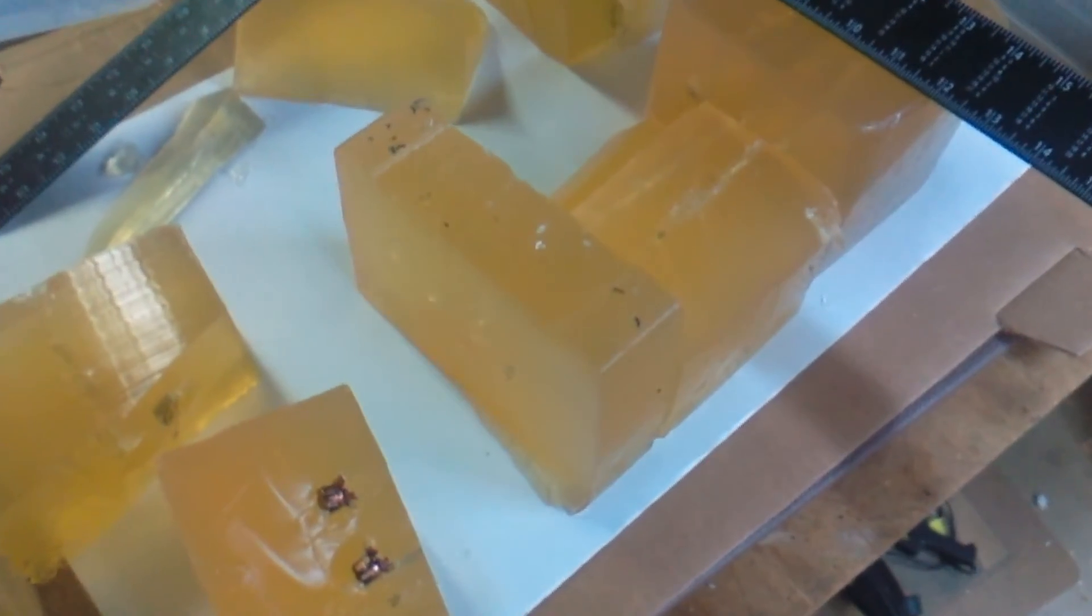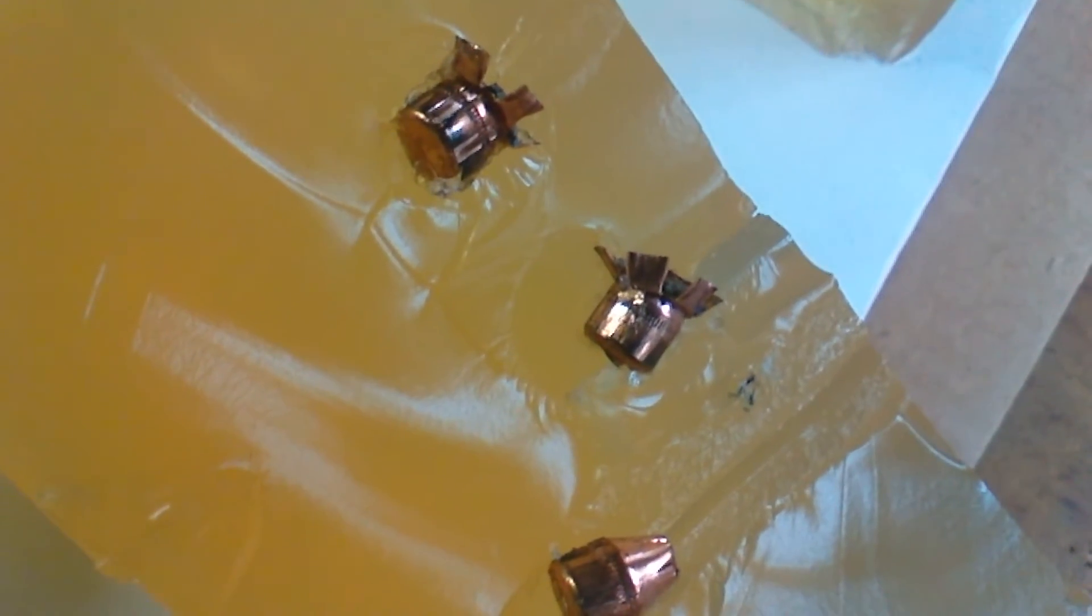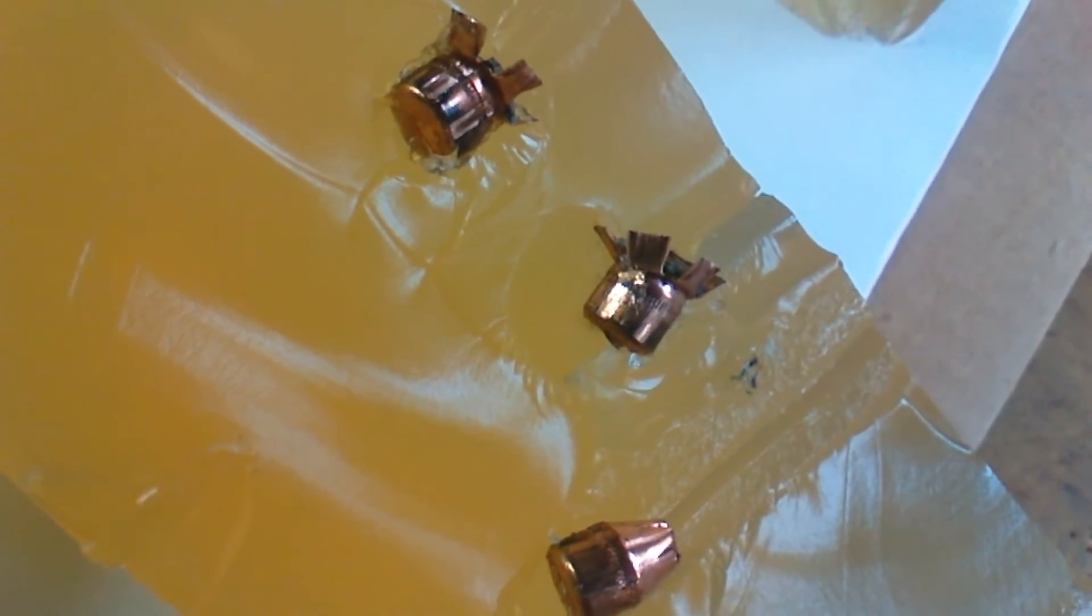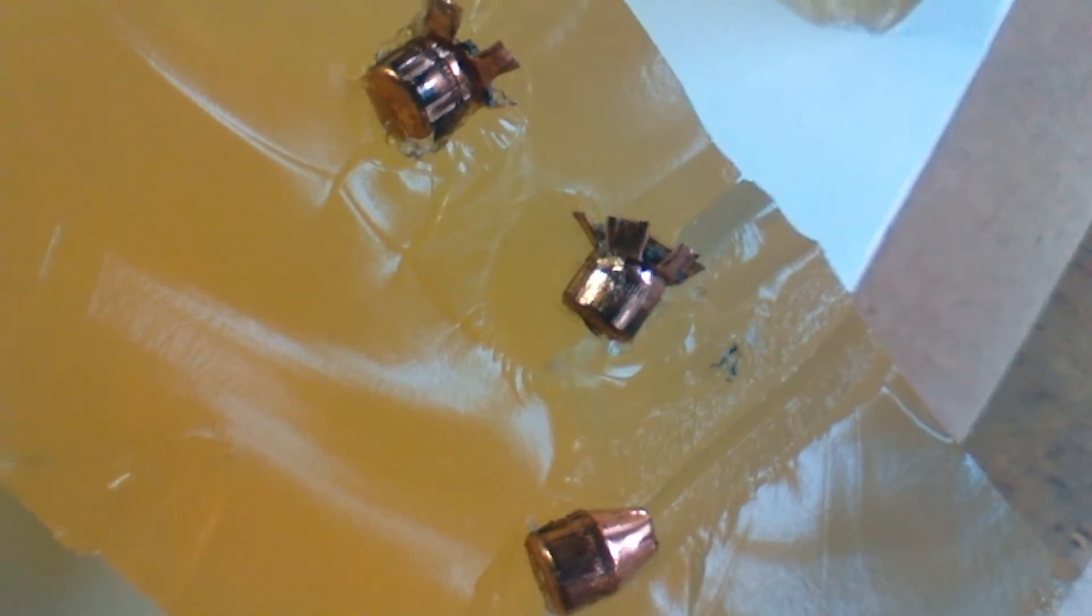As you can see here, I had some pretty impressive results. The Hornady Critical Defense out of the short barrel - two of them expanded. You can see the polymer tip is still in the gel right there.